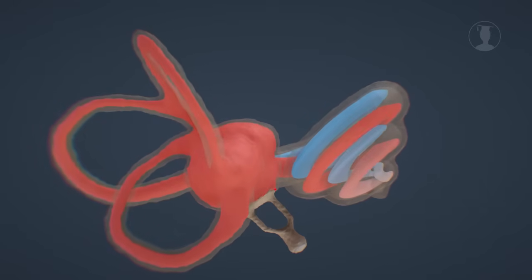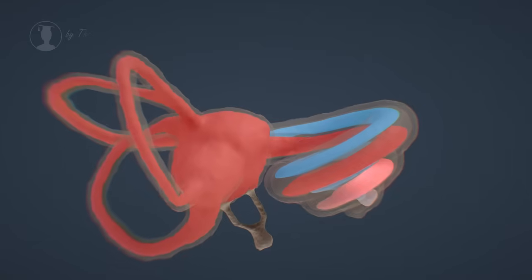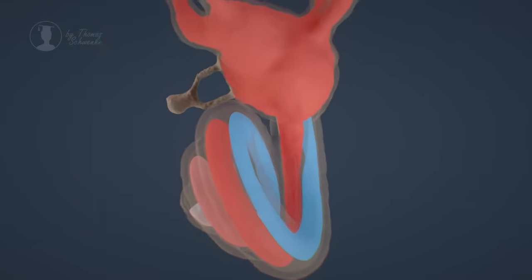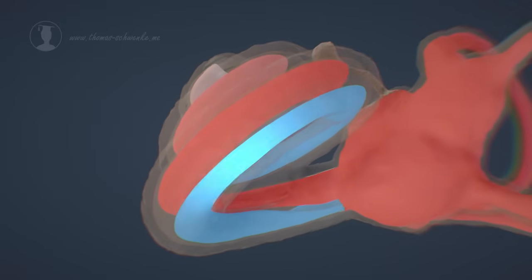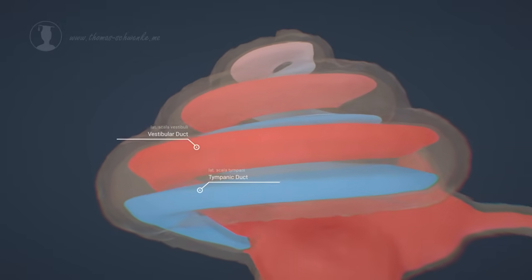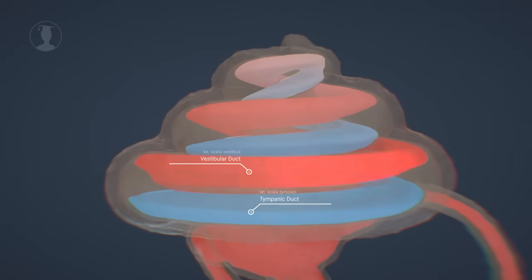The bony labyrinth has cavities inside that contain fluids. When the stapes moves, it transfers its energy to the fluid. This energy travels within the fluid as a pressure wave. We refer to these fluid-filled cavities as the scala vestibuli and scala tympani. They are connected at the highest point of the cochlea.